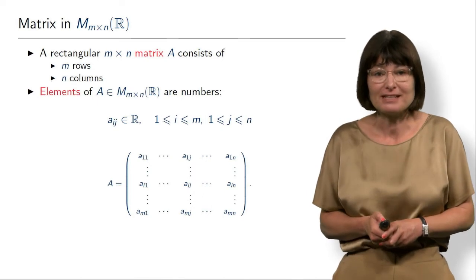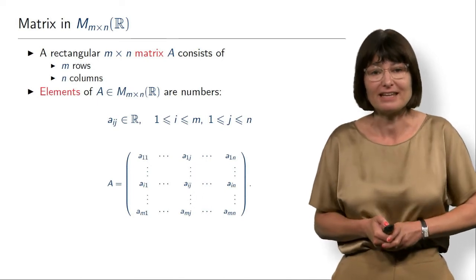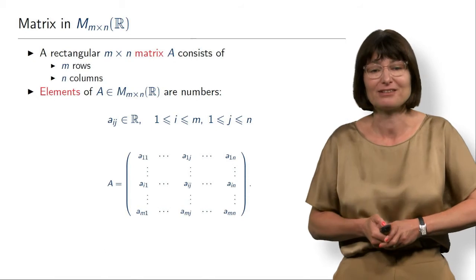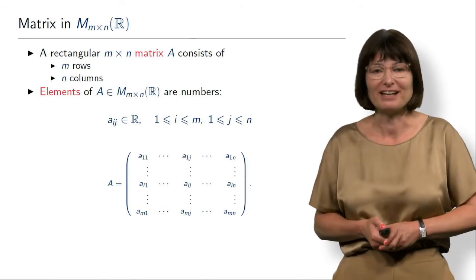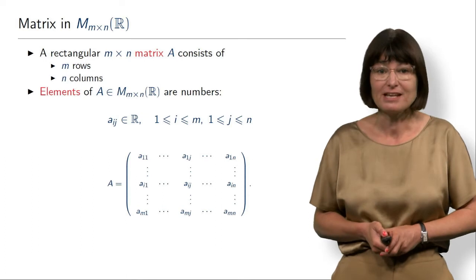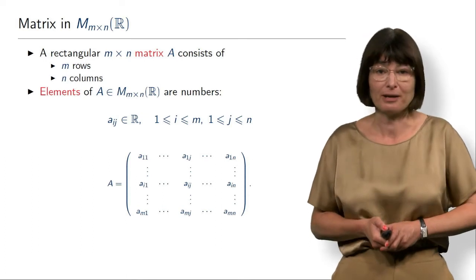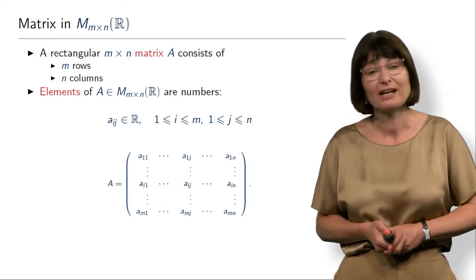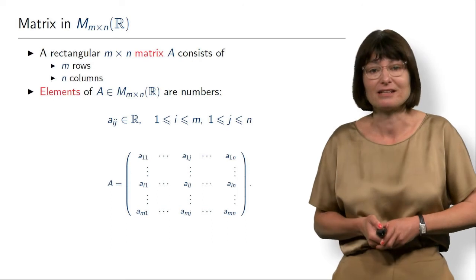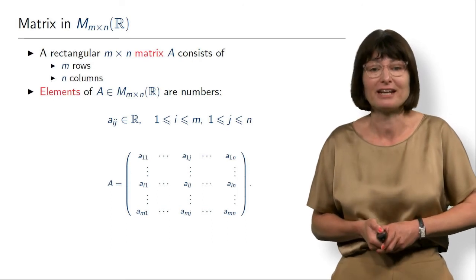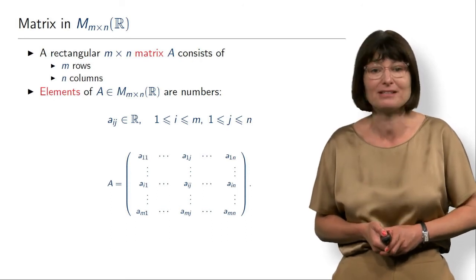So what does it mean that A is in M_m×n(ℝ)? M stands for matrices, m by n stands for m rows and n columns, and ℝ is the set where the elements of the matrix come from—these are the real numbers.